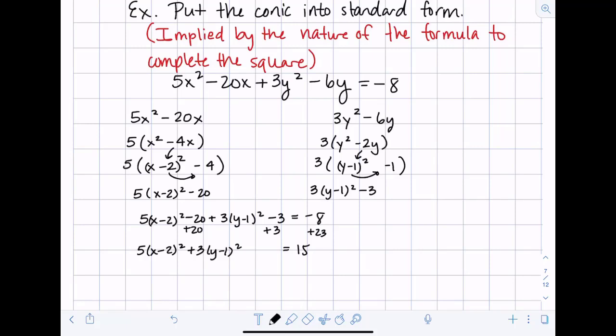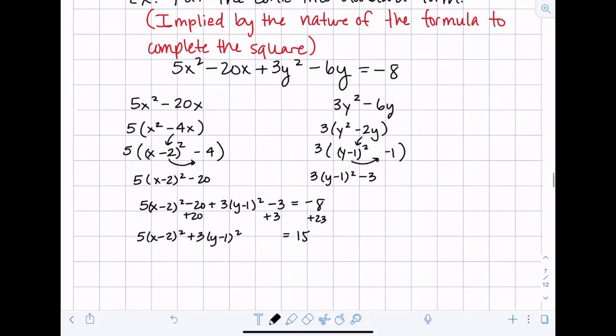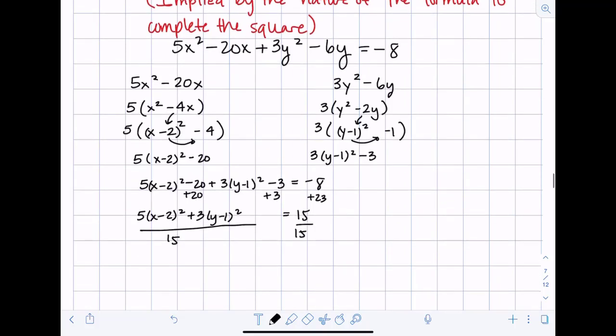Okay so for conics we're thinking about circles ellipses hyperbolas and we want to have an equals one on the right hand side so I don't want that 15. I will divide both sides by it. Okay and then we simplify our fractions so our first fraction is this 5 over 15 so that's going to simplify to x minus 2 squared over 3 and then our second fraction is this 3y minus 1 squared over 15 so that'll simplify to a fifth and we get 1 over here.